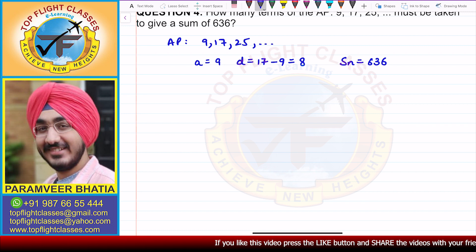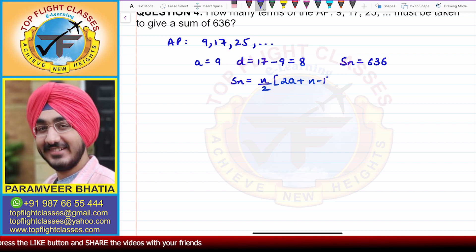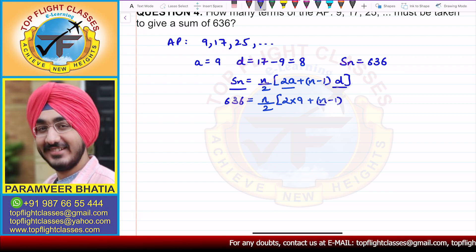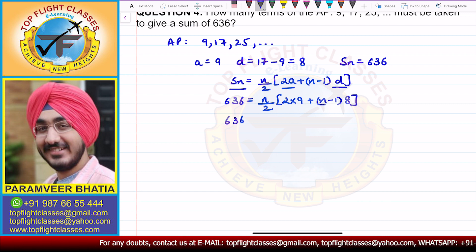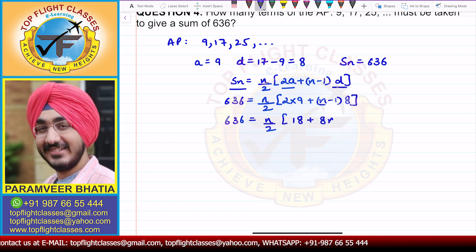We have to find the number of terms N. The sum of N terms is given by SN = N/2 times (2A + (N-1)D). Substituting, 636 = N/2 times (2 into 9 plus (N minus 1) times 8), which gives 636 = N/2 times (18 + 8N minus 8).